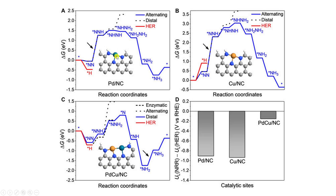For the copper single atom catalyst, the red color is hydrogen binding and the blue color is the nitrogen reduction profile. Likewise, for the dual atom catalyst they also calculated hydrogen binding and nitrogen reduction reactions. The blue colored one shows the alternating mechanism and the dashed one is the distal mechanism.